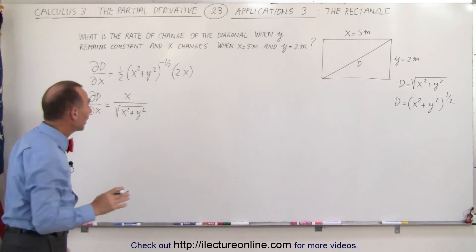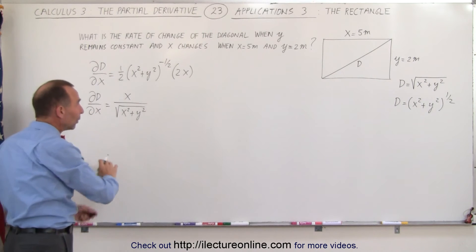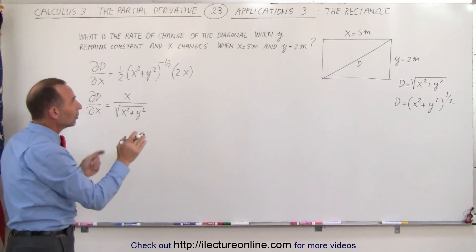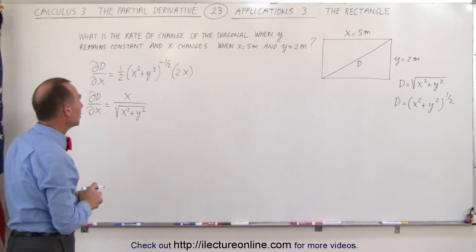Now we need to find the rate of change of the diagonal with respect to x with y constant at the moment that x equals 5 and y equals 2 meters.